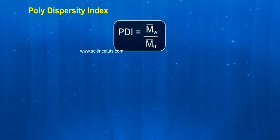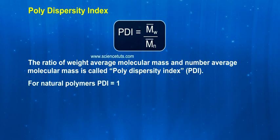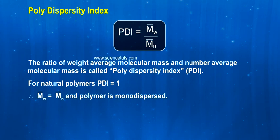Polydispersity index (PDI). PDI equals M̄w by M̄n. The ratio of weight average molecular mass and number average molecular mass is called polydispersity index. For natural polymers, PDI equals 1, therefore M̄w equals